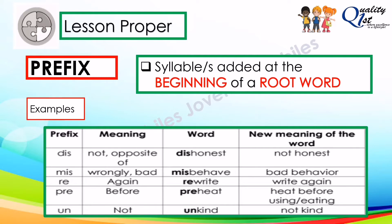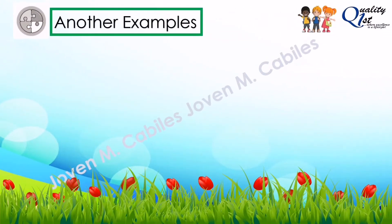The third prefix is 're-,' which means 'again.' If the root word is 'write' and you add the prefix 're-,' this will become 'rewrite,' and the new meaning of the word is 'write again.' The fourth one is 'pre-,' which means 'before.' If you have the root word 'heat' and you add the prefix 'pre-,' it will become 'preheat,' meaning 'heat before.' Lastly, the prefix 'un-' means 'not.' If you have the root word 'kind' and you add the prefix 'un-,' this will become 'unkind,' meaning 'not kind.'